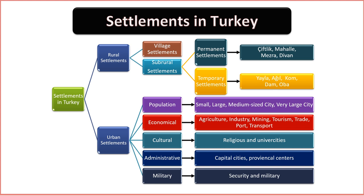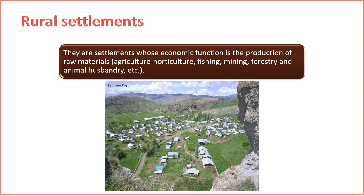A rural settlement refers to a community or group of dwellings located in rural or non-urban areas, characterized by a predominance of agriculture and natural landscapes. These settlements are typically smaller in size compared to urban areas and are often associated with agricultural activities, farming, and a more traditional way of life. Key features of rural settlements include: 1. Agricultural focus. Rural settlements are often situated in areas where agriculture is a primary economic activity. The community may be engaged in farming, livestock raising, and other related activities. 2. Low population density. Rural settlements generally have lower population densities, with communities spread out and greater distances between individual homes or farms.